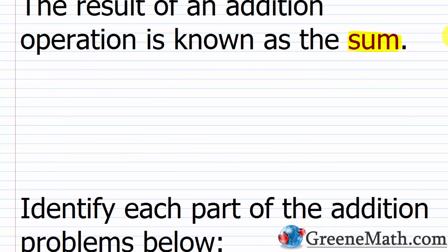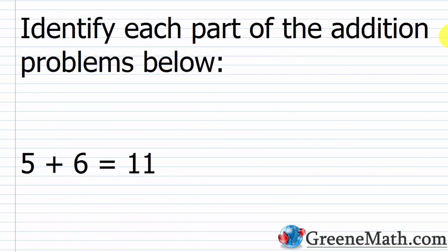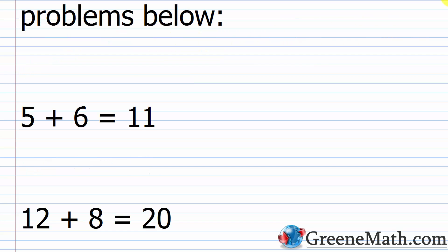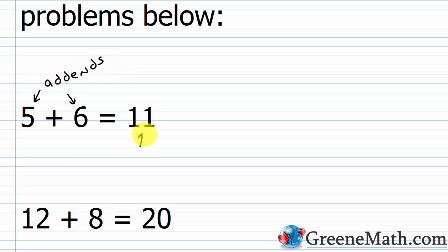Let's look at a quick problem and identify each part. We have five plus six equals eleven. The numbers being combined together are called addends, so five and six are the addends. Eleven, which is the result of the addition, is called the sum.